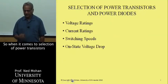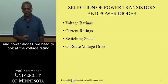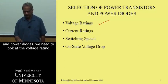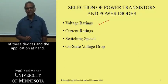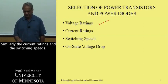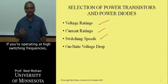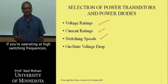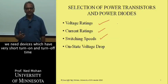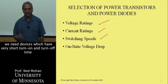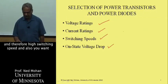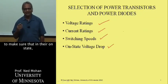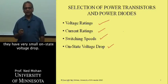When it comes to selection of power transistors and power diodes, we need to look at the voltage rating of these devices for the application at hand. Similarly, the current ratings and the switching speeds — if operating at high switching frequencies, we need devices with very short turn-on and turn-off times and therefore high switching speeds. We also want to make sure that in their on state, they have a very small on-state voltage drop.